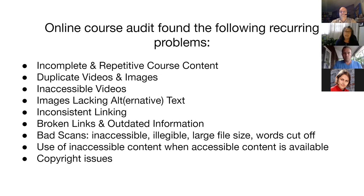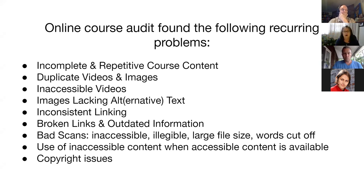Images lacking alternative text are really important. In Moodle you'll be prompted for a description of an item, and it's important as you develop your courses for the first time that you work that into your dynamic so it doesn't become an onerous thing to retrofit afterward. Inconsistent linking is something we've found — sometimes people use the URL resource, sometimes they drop the full HTTP string, and sometimes they hyperlink a title. We ask that you not drop in the full HTTP string because someone using a text-to-speech reader will hear that entire string rather than the title of the link. Whatever you choose, do it consistently so it's more predictable for your students.